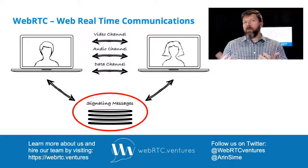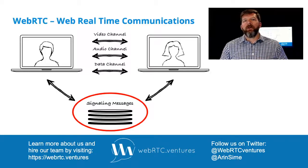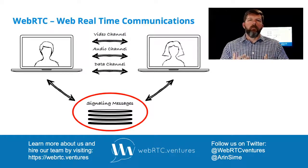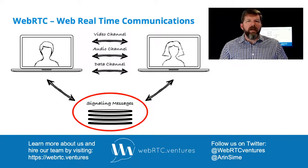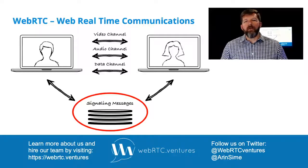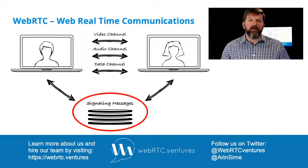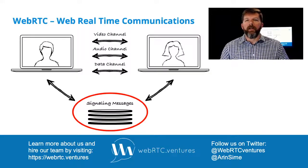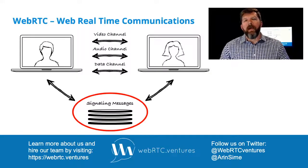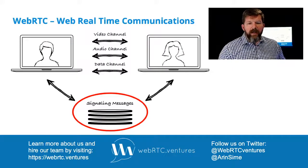This is where STUN and TURN come in — they're part of the signaling process. To establish that connection you have to have a signaling server that does some handshaking and helps connect those two parties together before they can have the peer-to-peer conversation. In a separate video we'll talk more about signaling in general, but for today I just want to talk about the difference between STUN and TURN as portions of that.